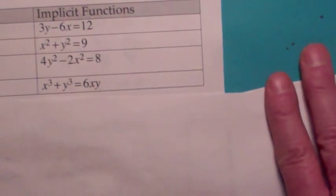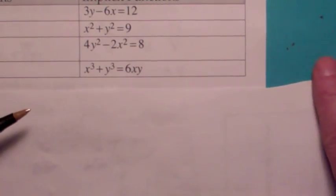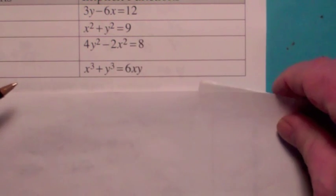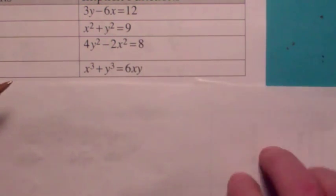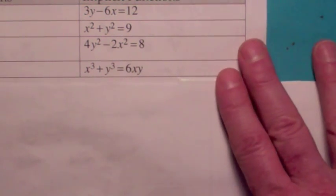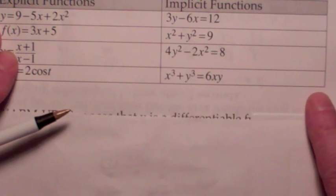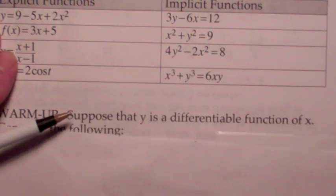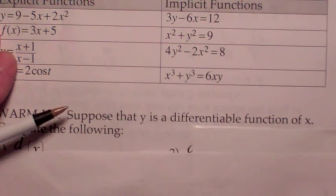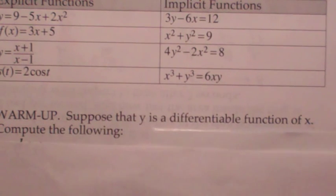The last equation we'll look at more in class. It's called the folium of Descartes. Notice you can't solve that for y. But yet, when we look at the graph in class, it will define several functions of x. So before we actually discuss this technique, let's do some warm-up problems here.